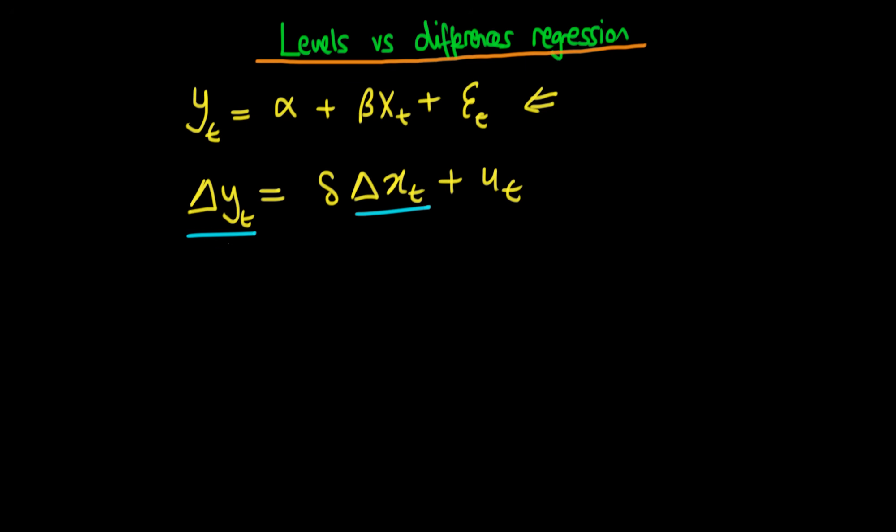Note that I haven't specified that the variables yt or xt are any particular type of variable, but normally when we're talking about whether to go with a levels regression or a differences regression, we're talking about variables which are typically non-stationary in level.